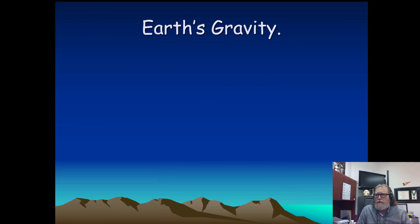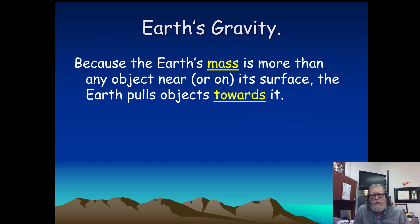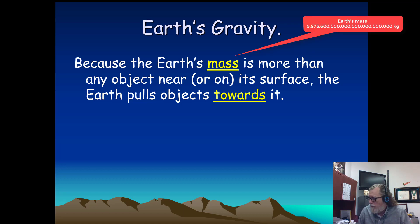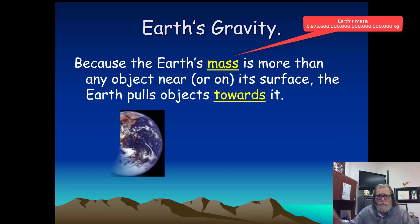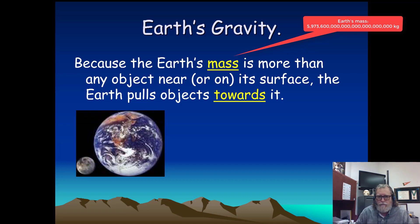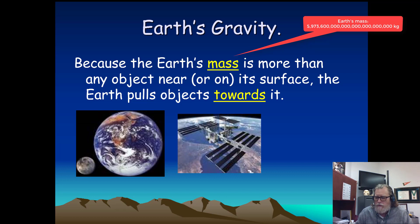Earth's gravity. Because the Earth's mass is more than any object near or on its surface, the Earth pulls objects towards it. This thing is not nearly as massive as the Earth, so it gets pulled towards it.